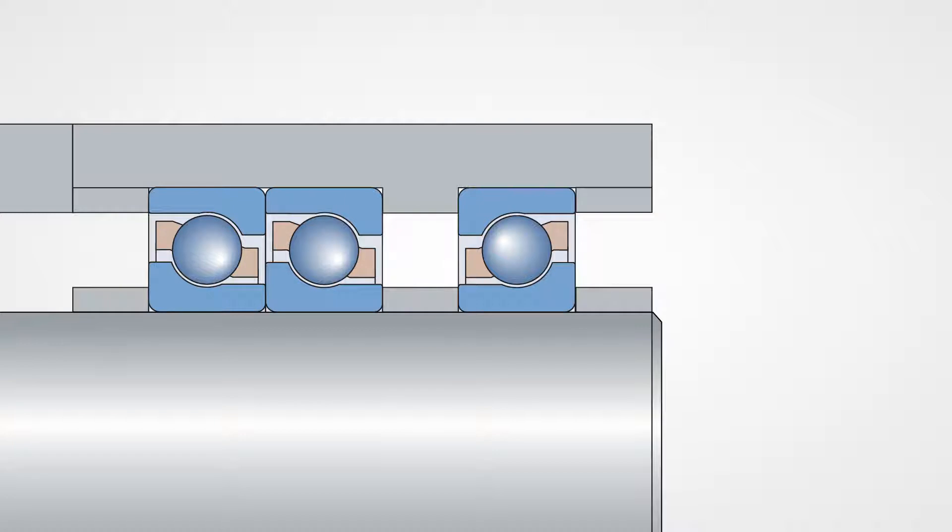When mounted in these configurations, the clearance in the bearing is predetermined during manufacture and is indicated by the suffixes given in the bearing designation. Various degrees of clearance or preload are available to suit different application requirements.